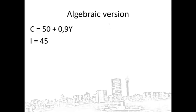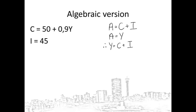First, we know that aggregate spending is equal to consumption spending plus investment spending. The equilibrium condition is that aggregate spending should be equal to total production. Therefore, we can write y is equal to C plus I. Let's substitute the consumption and investment functions into this formula: y equals 50 plus 0.9y plus 45.